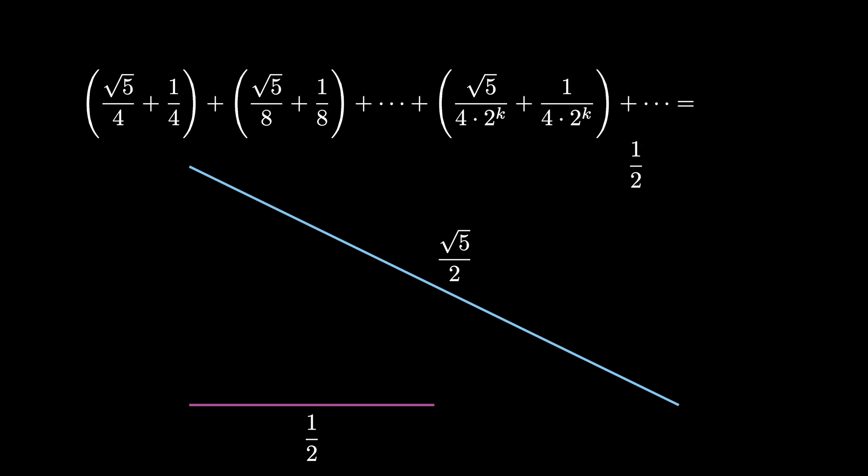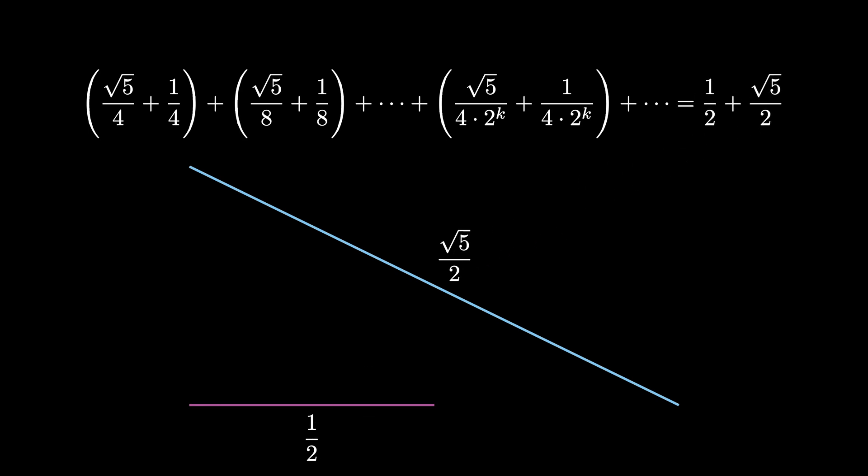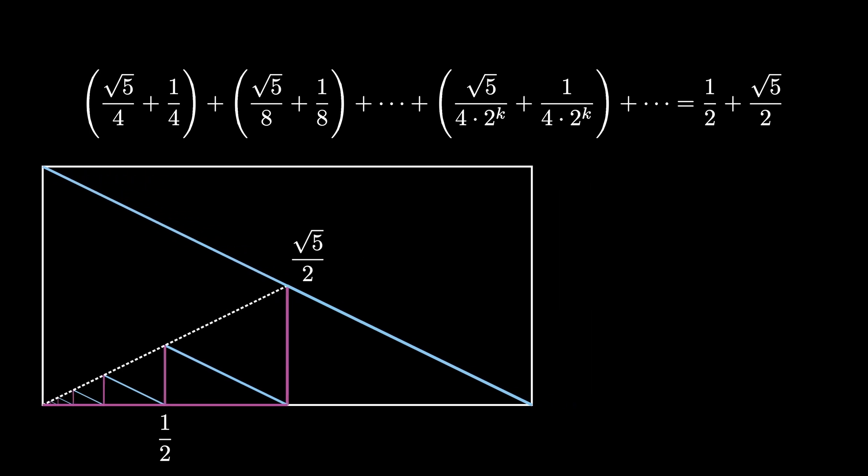So it's 1 half plus the square root of 5 over 2. This is a geometric series with first term square root of 5 over 4 plus 1 fourth and ratio 1 half. And we see from this diagram that the infinite sum where k ranges from 0 to infinity of the square root of 5 plus 1 over 4 times 2 to the k is 1 half plus the square root of 5 over 2. This latter number is known as the golden ratio.